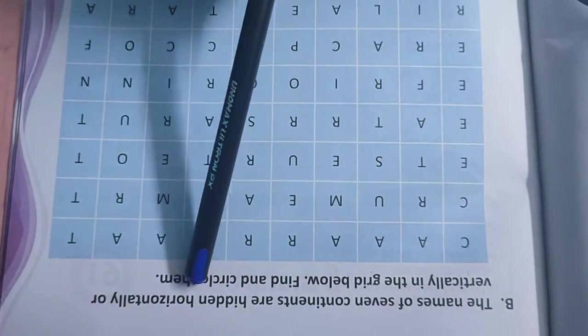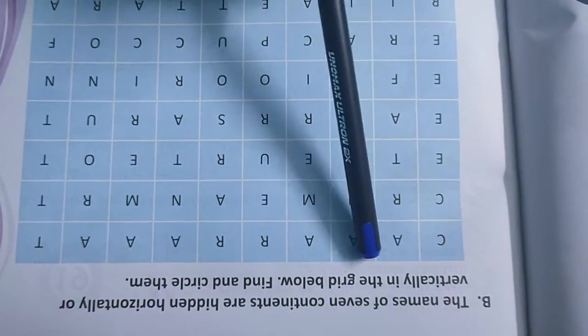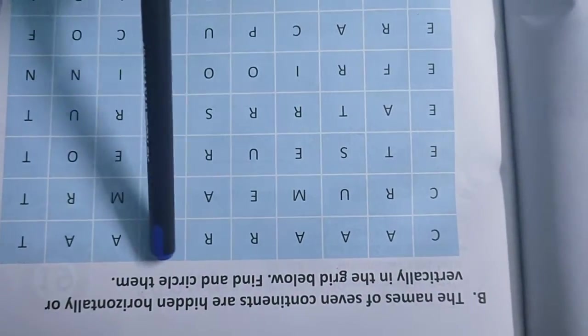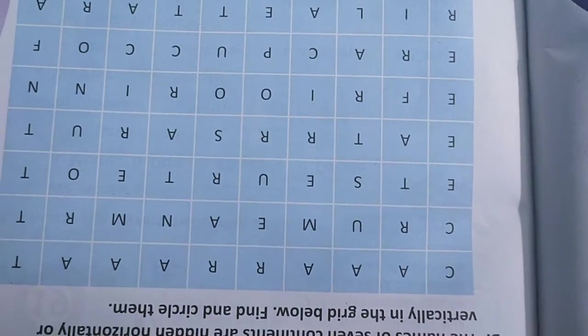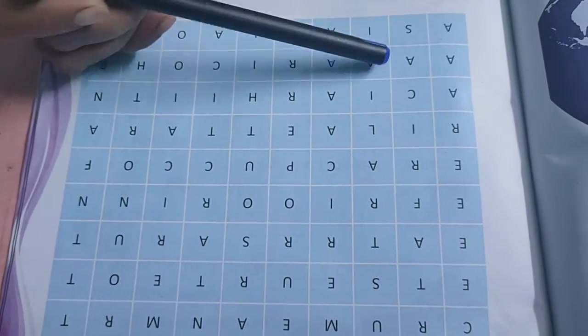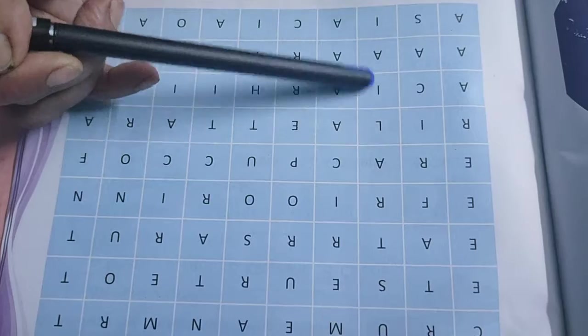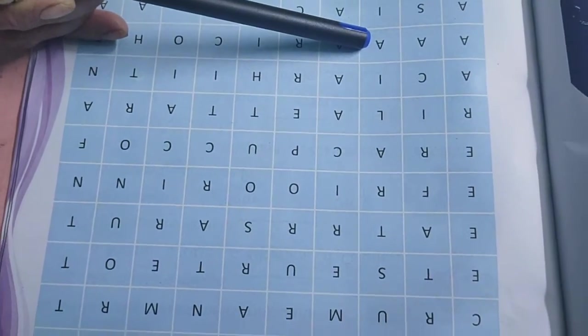Number B, the names of 7 continents are hidden horizontally or vertically in the grid below. Find and circle them. The names are there. Africa. Here it is Africa. Then Australia.